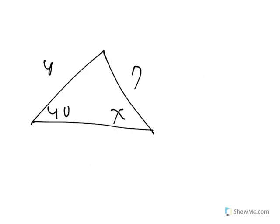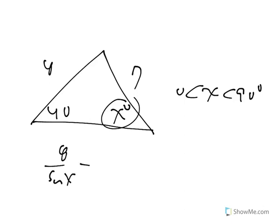The law of sines could also be used to find a missing angle. Although we have to know that the picture is drawn to scale. So x is going to be between 0 and 90 degrees according to this diagram. And I say 8 over sine x equals 7 over sine 40. Or if I cross multiply, 7 sine x equals 8 sine 40.